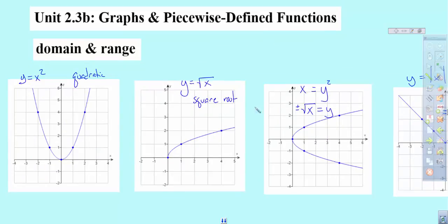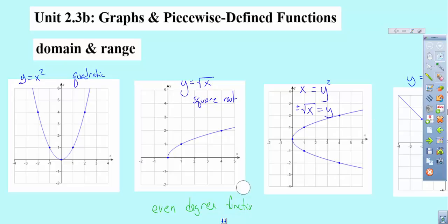As we turn the page, carrying on that concept — these would be considered even degree functions. Well, not all of them — these are even degree except for the absolute value. They're not all functions because of the vertical line test. So these are even degree, and you'll see what I'm talking about as we look at the conclusion here.